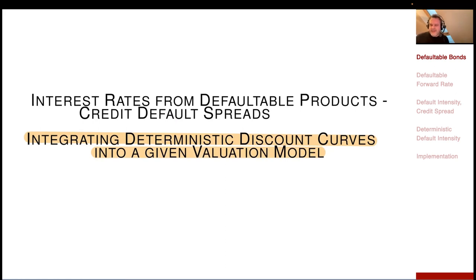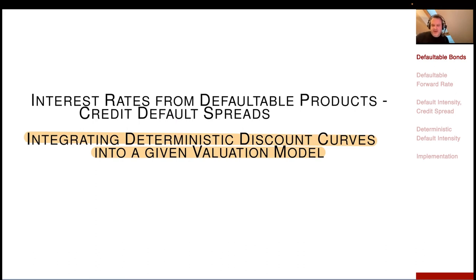This links back to our discussion of the discrete term structure model, the LIBOR market model. Of course, we already did this technique but did not view it from that point. This is a general trick, and you can apply it to short rate models and other models. It is a general technique that lets you extend any given valuation model to consider an additional discount curve or additional discount curves.